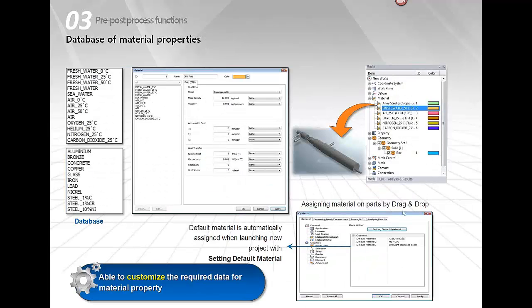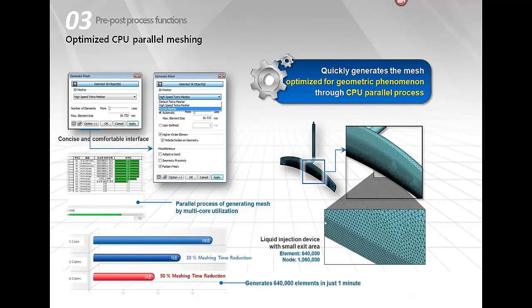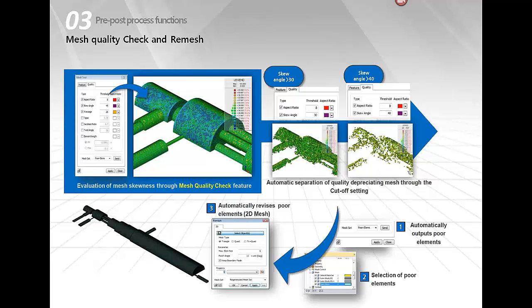We have a database of CFD materials, CPU parallel meshing to mesh parts simultaneously, and different meshers. Mesh quality check and remeshing are also available. For CFD, mesh quality is very important — you need to check the aspect ratio, skew angle, warp edge, and Jacobian ratio. You can set your own threshold, identify poor mesh elements, and remesh accordingly.